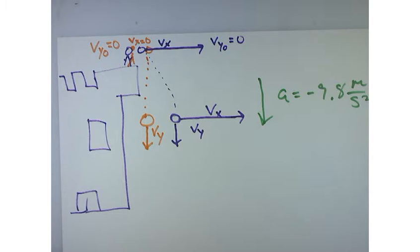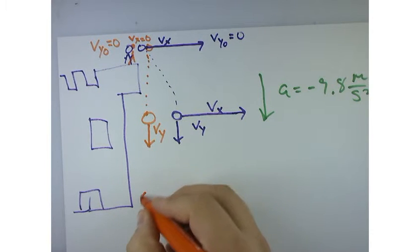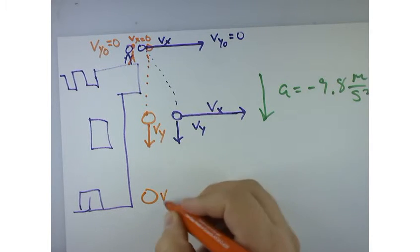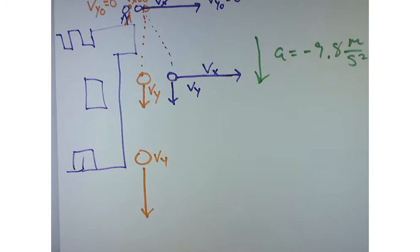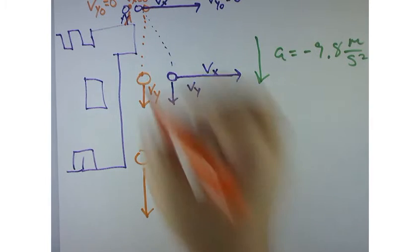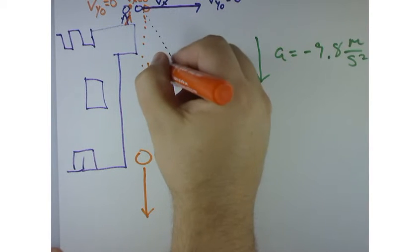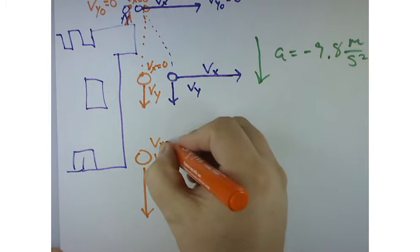Now let's fast forward to right before it hits the ground. Right before this thing hits the ground is going to be its maximum velocity in the y direction. However, here, v sub x is equal to zero. Here, v sub x is equal to zero.